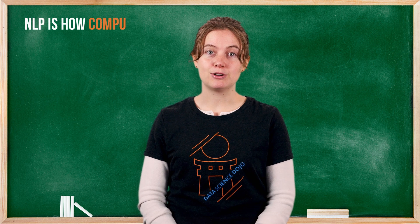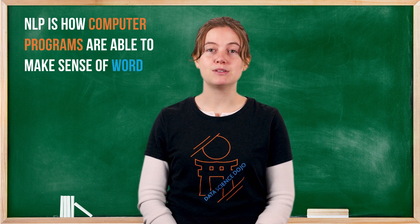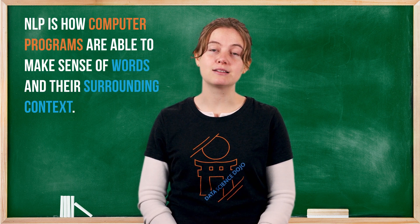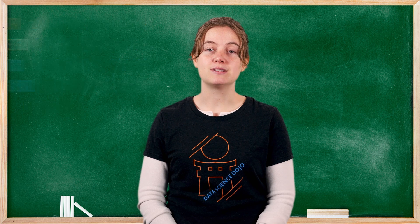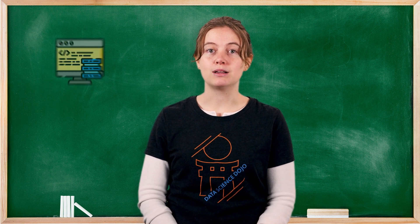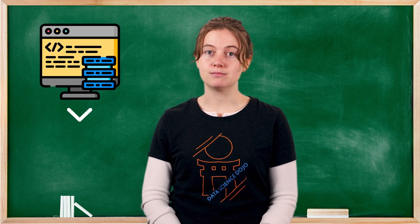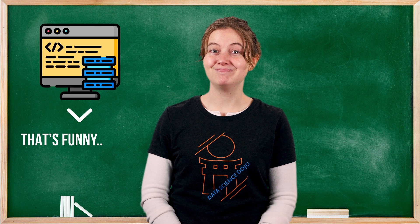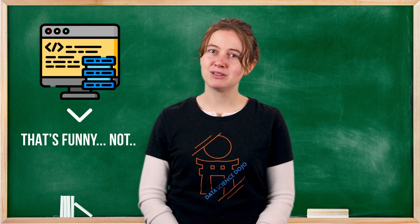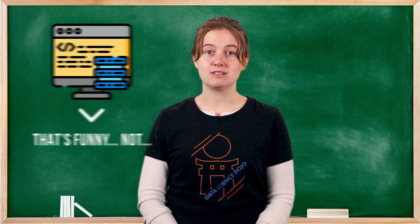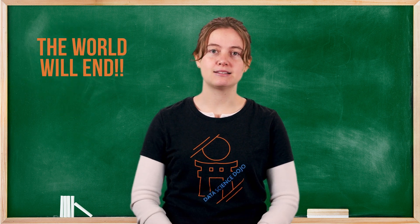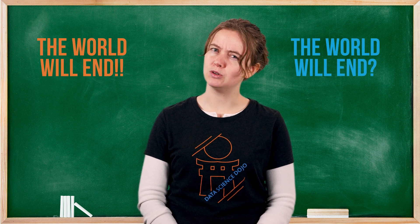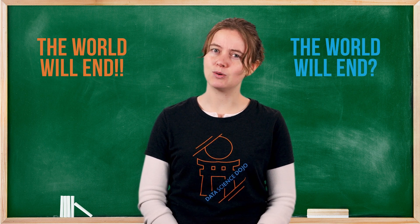Natural language processing is how computer programs are able to make sense of words in the surrounding context. For example, you could write a computer program to pick up on sarcasm, such as 'that's funny, not?' Or to understand 'the world will end' as an exclamation versus 'the world will end' as a question.